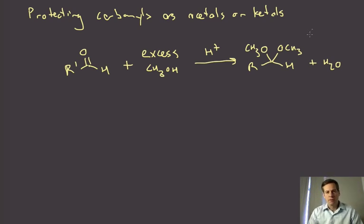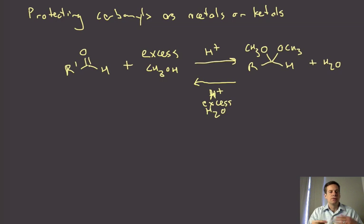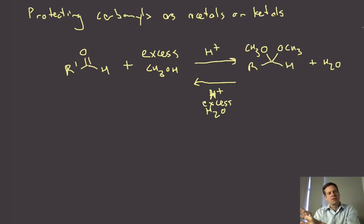We can go off and do chemistry on the molecule, and then when we need to remove the protecting group, all we do is treat it with a proton again. We have water around — excess water — to push the equilibrium back to the carbonyl. So excess alcohol drives the reaction forward, and excess water drives it backward. It's just that simple to protect and deprotect.